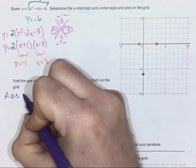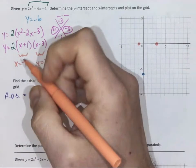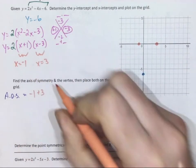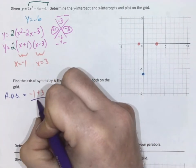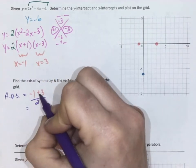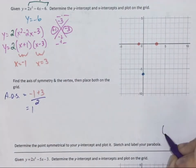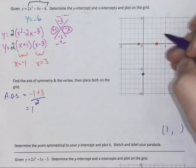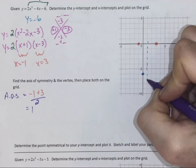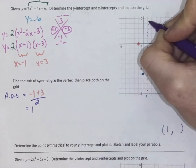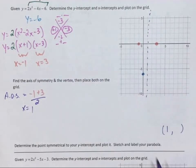So I'm going to add negative 1 plus 3, all divided by 2. That's 2 divided by 2 is 1. So again, for my vertex, I've got 1 and I've got something. There's my axis of symmetry, x equals 1.